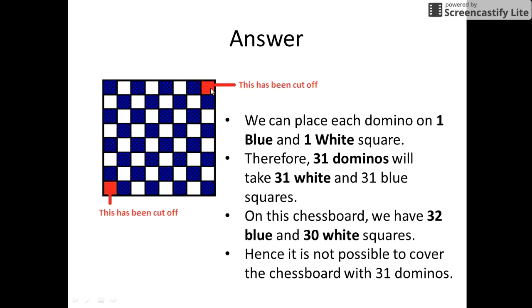But look carefully: when we cut the two squares from the diagonally opposite ends, they are of the same color. That is, if we cut the squares from these two diagonally opposite corners they are white. If the squares are cut from these two diagonal corners then they are blue.